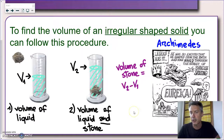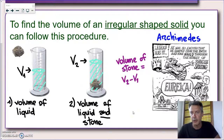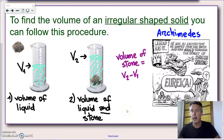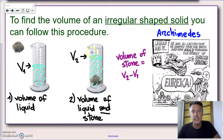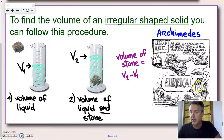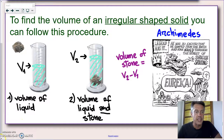Just to leave you on a historical note — I love to share tales about the history of physics — this method, at least the origin of it, was invented by Archimedes, shown here in modern-day Sicily, when he solved the famous problem of the crown using a method very similar to this one. I'll tell you more about this in class.